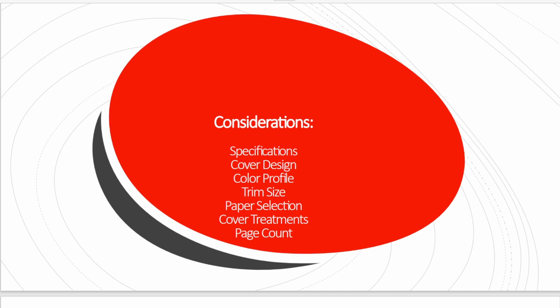Rough edges are called a deckled edge — that ripped-looking face of the book. Yes, we can do it, but those sorts of treatments typically require about a 1,000-unit minimum because there aren't many printers that do it anymore.